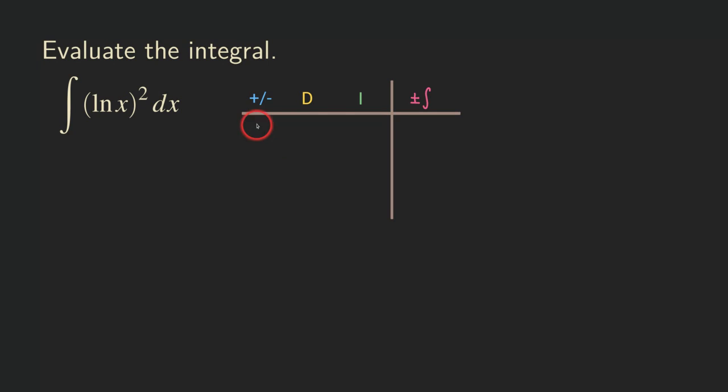So now we have the table here, just the usual columns. Sometimes people also call this the DI method because there's one column that we are differentiating, one column that we are integrating.